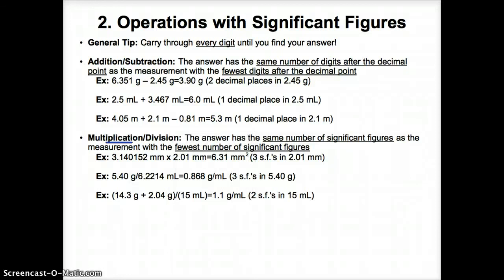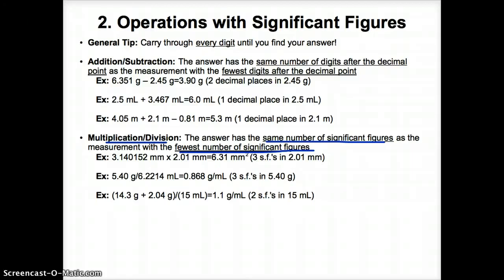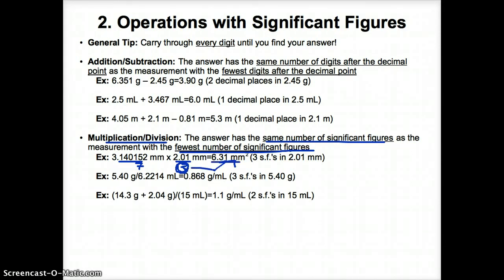Next, let's do multiplication and division with sig figs. The answer will always have the same number of sig figs as the measurement with the fewest number of sig figs. So let's try this out. Here we have a total of 7 sig figs, and we multiply that by 2.01 millimeters, which has only 3 sig figs. Obviously, 2.01 has fewer sig figs, and this number of 3 sig figs — since it's the least — is the number that must go in our answer. So when we calculate this volume, we get 6.31 millimeters squared, because whichever measurement has the least number of sig figs tells us how many sig figs we must get in our answer.